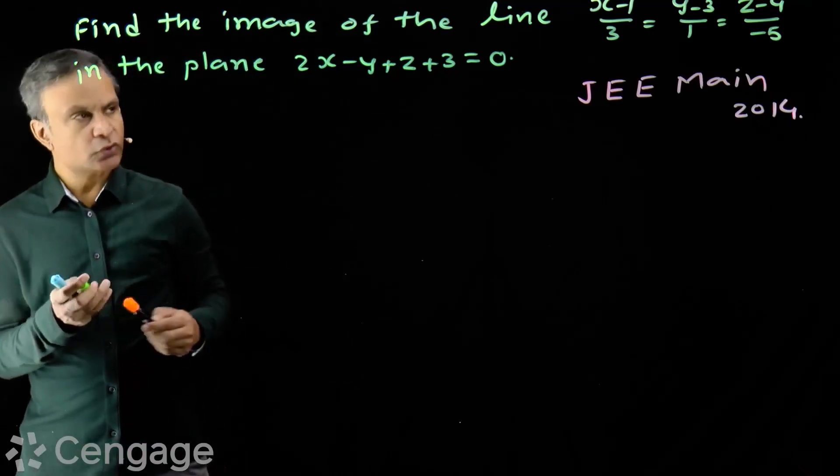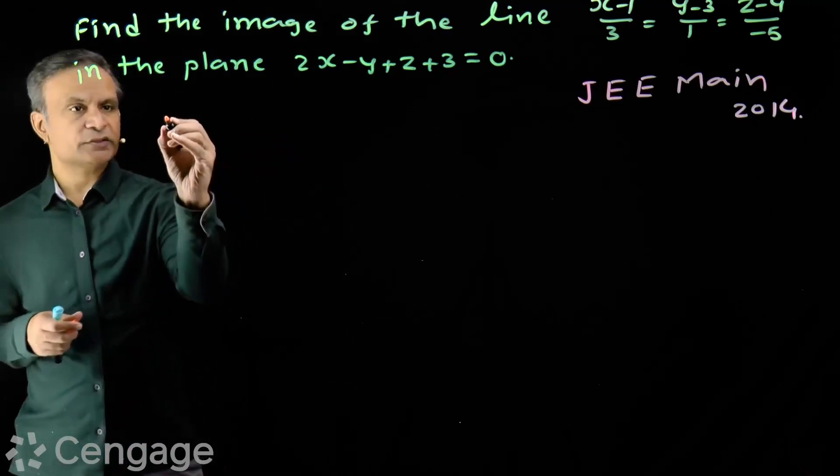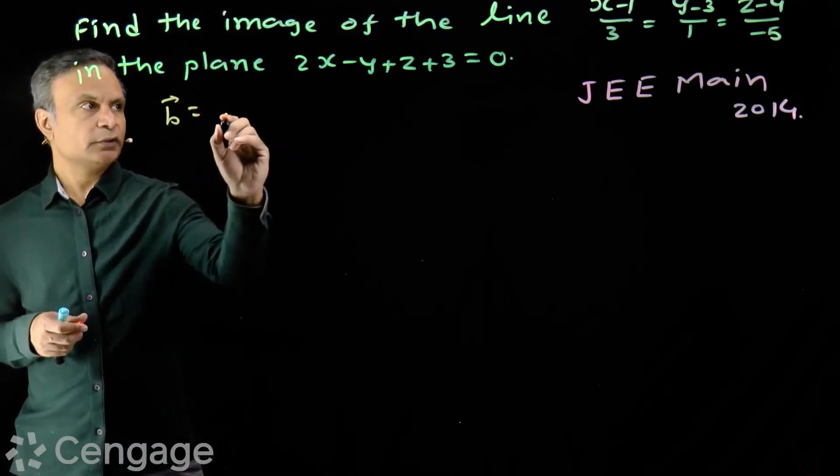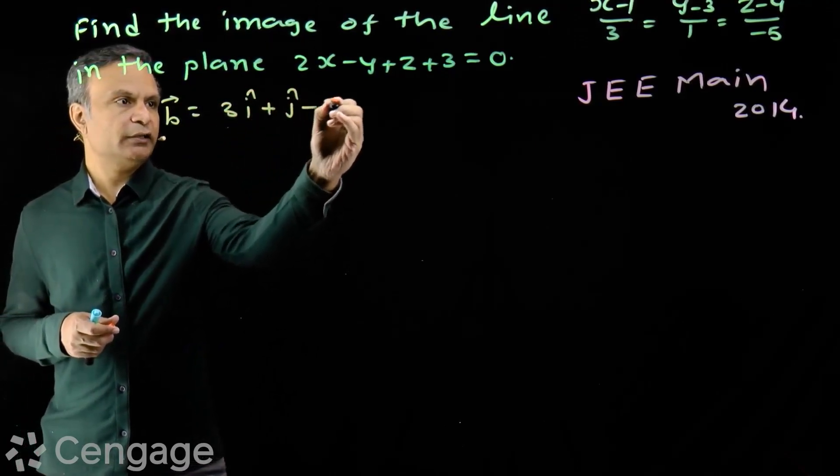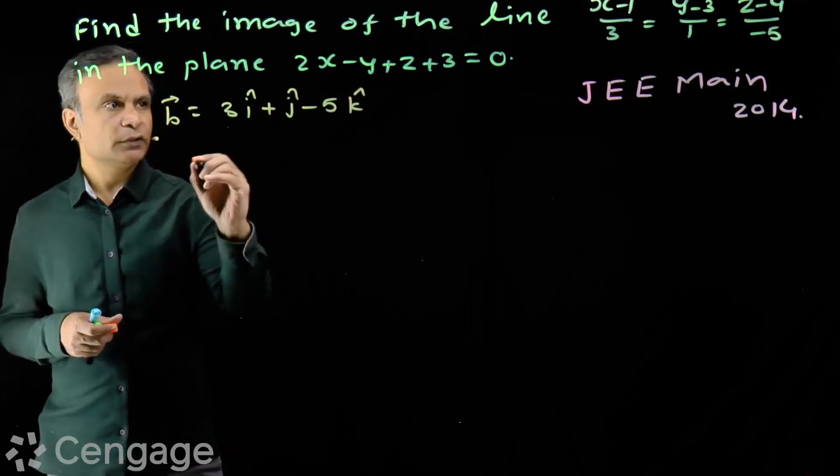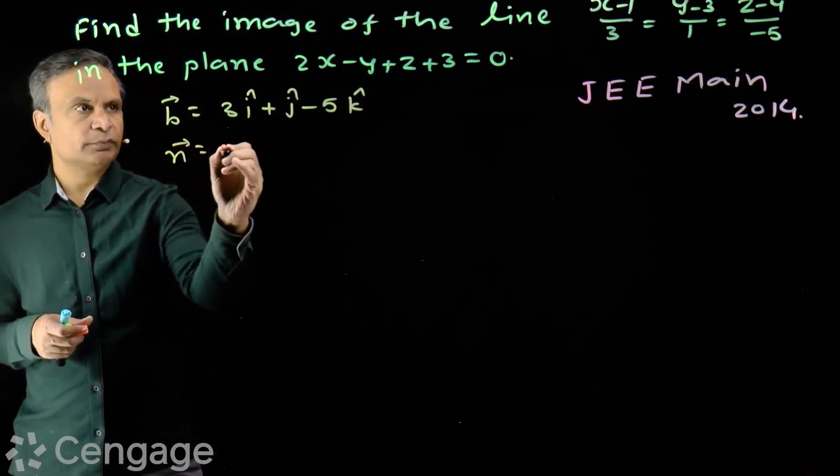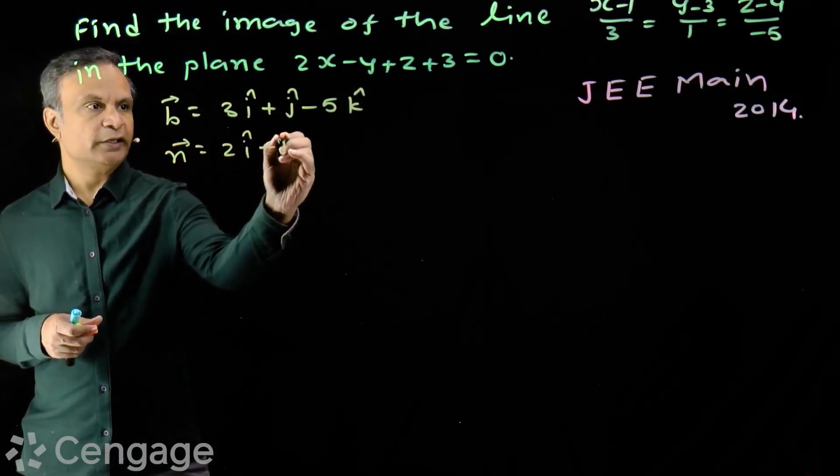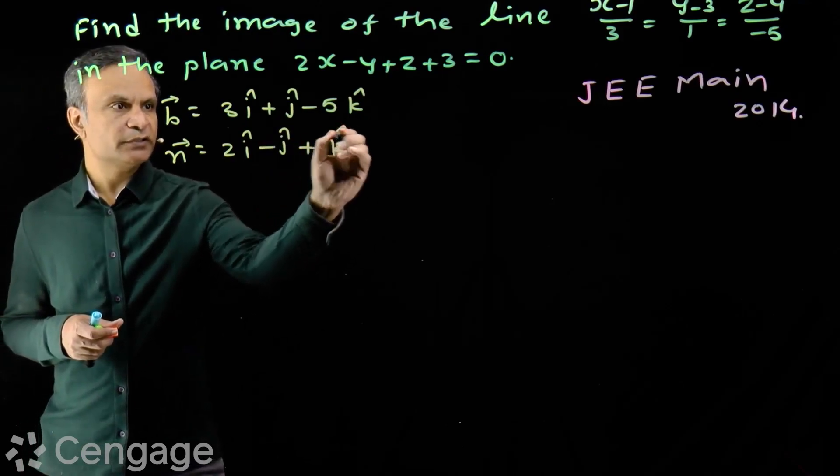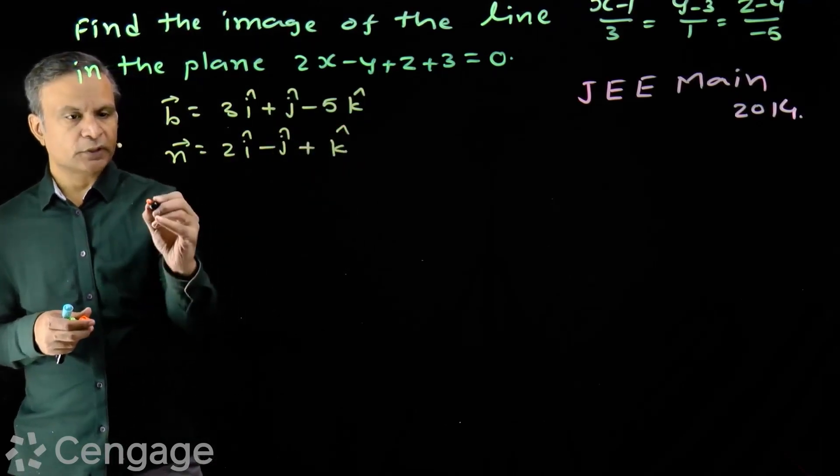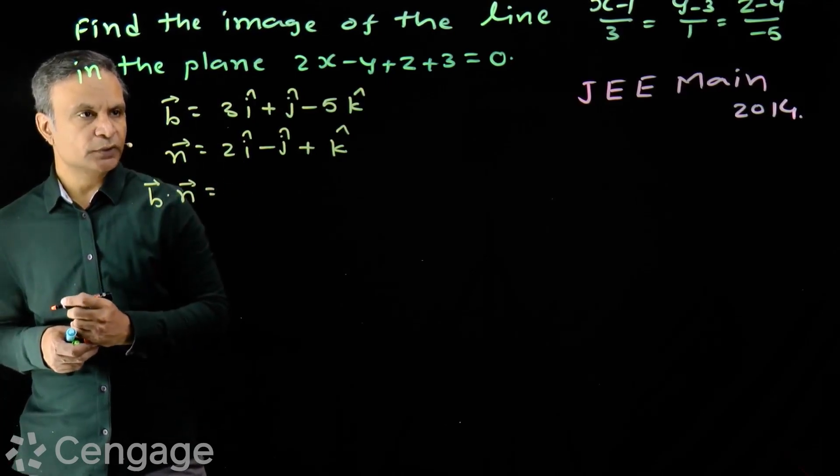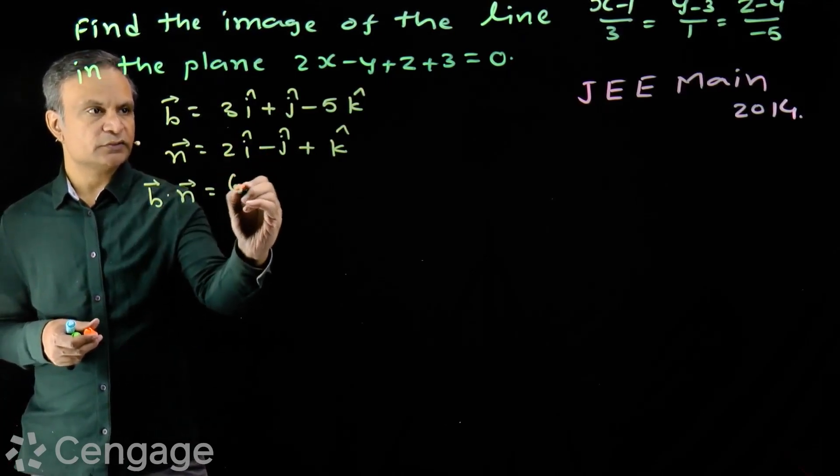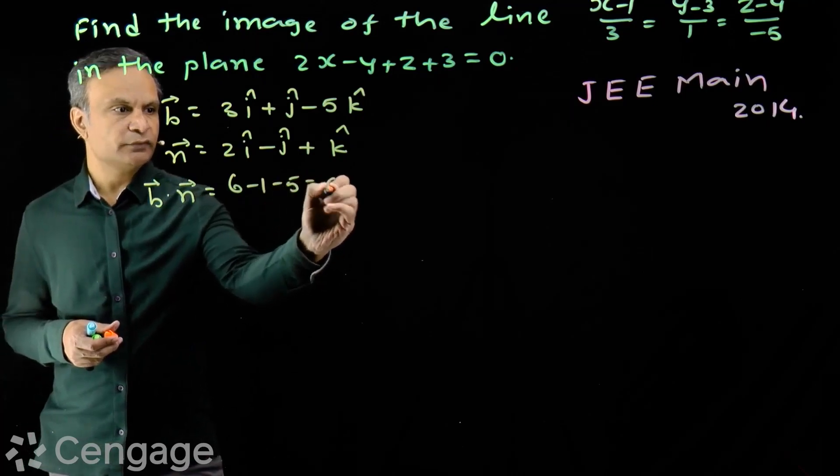Direction ratios of line are 3, 1 and minus 5. So, vector along line is 3i plus j minus 5k. And vector normal to the plane is 2i minus j plus k. Now, b dot n is 6 minus 1 minus 5. This is 0.